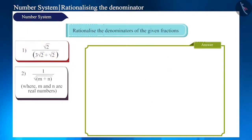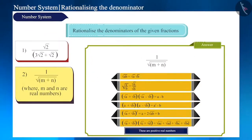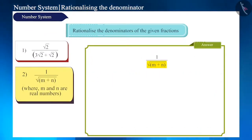Can you guess which identity should be used in the next question? Here, the denominator contains root of m plus n the whole. So, should we multiply the denominator and the numerator with root of m minus n the whole?